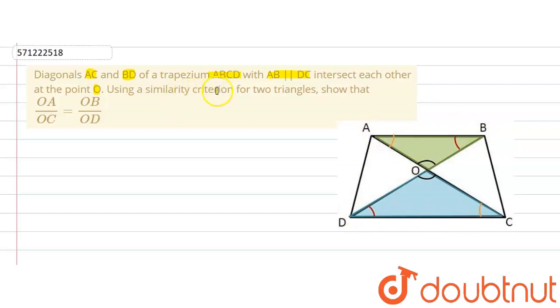Now using similarity criterion, we are supposed to prove that OA divided by OC equals OB divided by OD. This is what we are required to prove: OA divided by OC equals OB divided by OD.